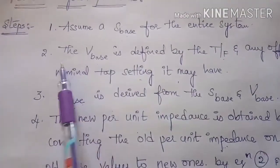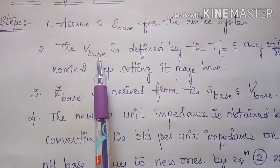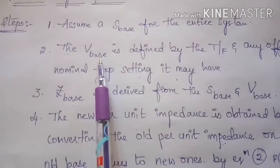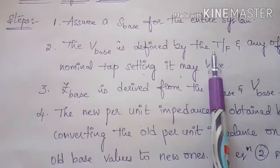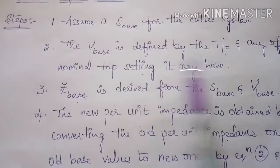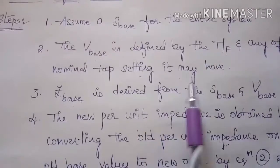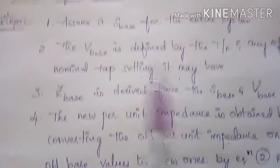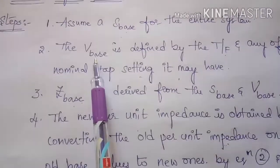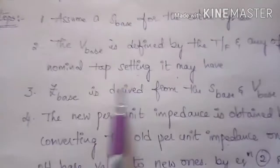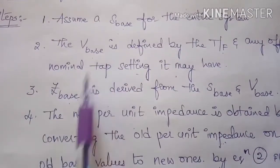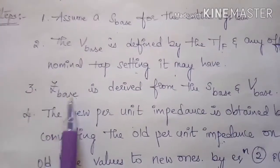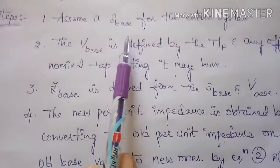The second step is to identify the V base value using the transformer ratings and any nominal tap settings it may have. After identifying V base, the third step is to calculate Z base using S base and V base.